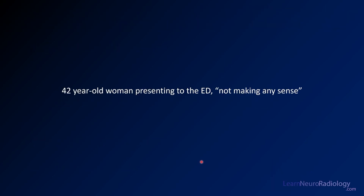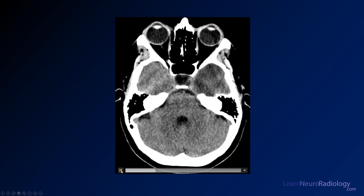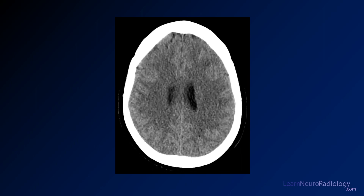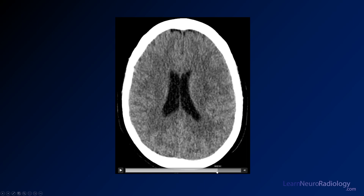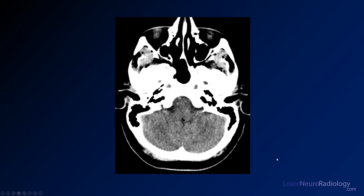Now we're going to take a look at a case — a CT from a 42-year-old woman coming to the emergency department, not making any sense. Here we have some images from a CT. This is a scrollable movie; I'll play through this so you can take a look. What you can see is there's a lot of edema in the left cerebral hemisphere, some of the basal ganglia, insula and sub-insula regions, going down the temporal stem into the temporal lobe. It definitely looks swollen and expanded — we have to think about the possibility of tumor.